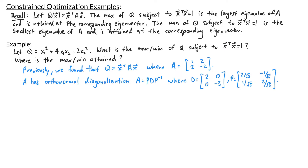We've even found an orthonormal diagonalization for this matrix. We have the diagonal matrix D with entries 2, 0, 0, negative 3, and the matrix P with columns 2 over root 5, 1 over root 5, and negative 1 over root 5, 2 over root 5. So this tells me that matrix A has eigenvalue 2 with corresponding eigenvector (2/√5, 1/√5), and also eigenvalue negative 3 with eigenvector (−1/√5, 2/√5).